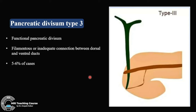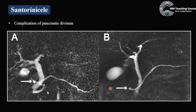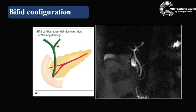Pancreatic divisum type 3 is functional pancreatic divisum — a filamentous or inadequate connection between the dorsal and ventral ducts. You can see that filamentous communication between the two ducts. A complication is Santorini seal, which is dilatation at the minor papilla — always look at the minor papilla to see whether it is dilated.